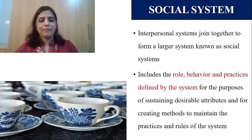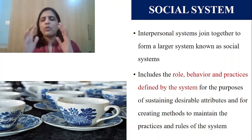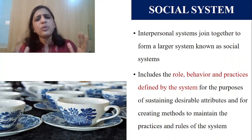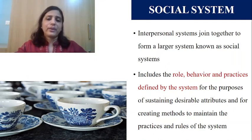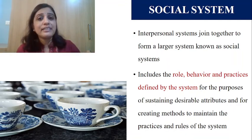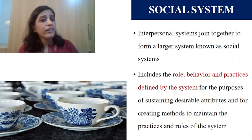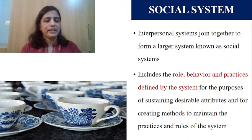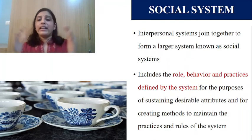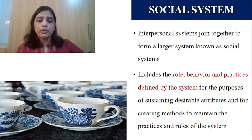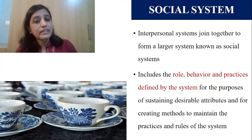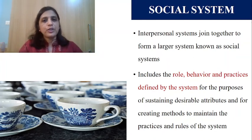Now moving to the last system — the social system. When interpersonal systems join together, they form a larger system called the social system. Examples include the hospital setting, a religious group, or a group of nursing professionals. When this interpersonal system forms a larger group, it becomes a social system. King wants us to know that within this social system, there are certain roles, behaviors, and practices defined by the system.